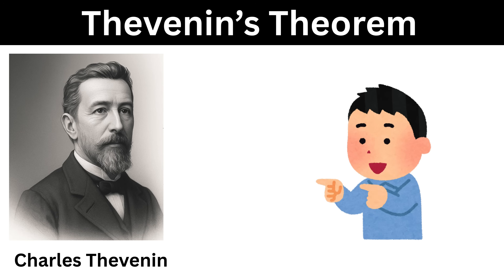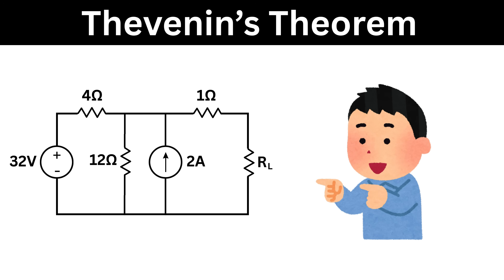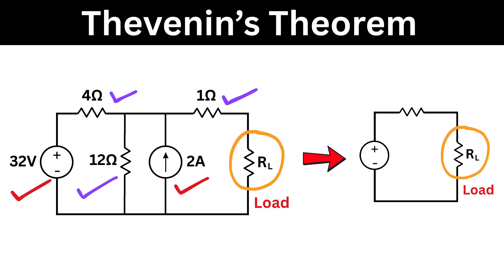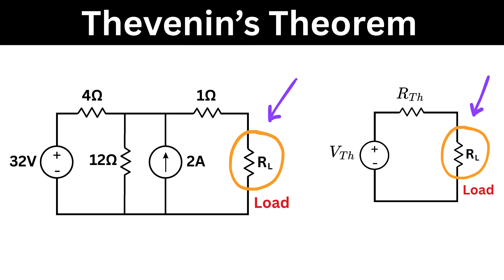Thevenin's theorem says that no matter how big or complex an electric circuit is — all the batteries, voltage sources, current sources and resistors that are connected to the part we care about, which we call the load — can be replaced with a single voltage source and a single resistor. We represent this single voltage source with VTH and single resistor as RTH. RL is the load resistance across which we want to find the voltage or current using the simpler Thevenin circuit.